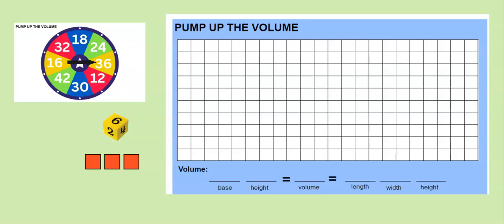and also length times width times height equals volume. What I'm going to have the children do is spin a spinner, which gives them their base. In this case, they spun the number 36, so I'm going to write 36 here.